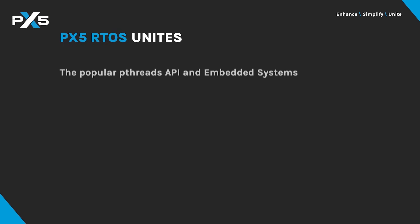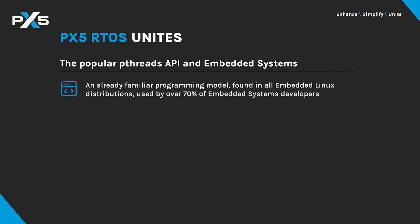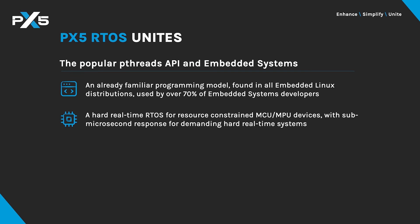PX5 unites the popular, familiar IEEE POSIX Standard PThreads API with the needs of the embedded systems industry. This API is familiar to the more than 70% of embedded developers who use embedded Linux today. PX5 unites this API with a native, hard, real-time RTOS, small and simple enough for even resource-constrained MCU devices, all with full commercial licensing and expert technical support from our engineers.